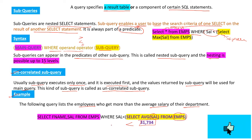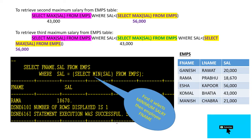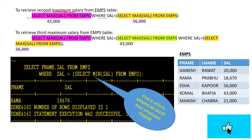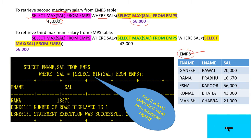The second example is to retrieve the second maximum salary from the EAMPS table. The main query is SELECT MAX salary FROM EAMPS WHERE salary is less than, and the subquery is SELECT MAX salary FROM EAMPS. The maximum salary is 56,000, so the result will be 43,000. From the employees table, the maximum salary is 56,000, so it will return 43,000 in the result table.